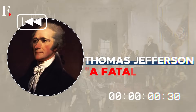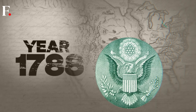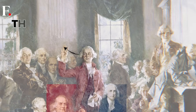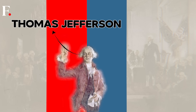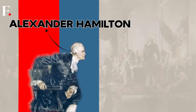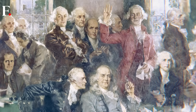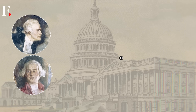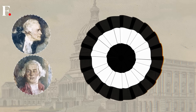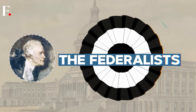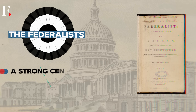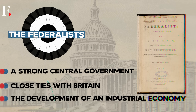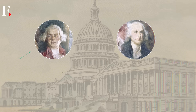Let's go back to 1788. The Constitution was ratified. George Washington was the first president, Thomas Jefferson was the Secretary of State, and Alexander Hamilton was the Treasury Secretary. Jefferson and Hamilton had competing visions for America. Soon, two political factions quickly emerged. There were the Federalists, led by Alexander Hamilton. The party wanted a strong central government, close ties with Britain, and the development of an industrial economy.